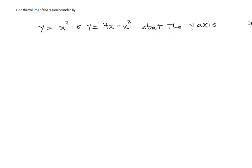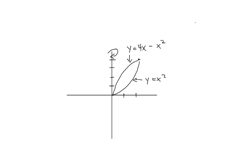Our formula is a little bit different. Looking at our graph, we have y equals x squared as our lower function and y equals 4x minus x squared as our upper function. We have a vertical axis of rotation, so our slice is going to be vertical.